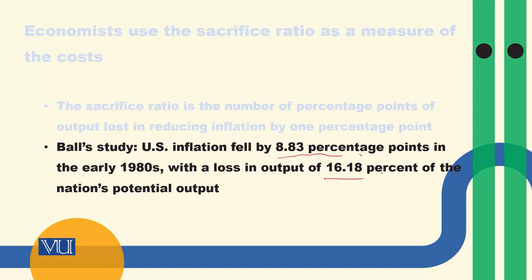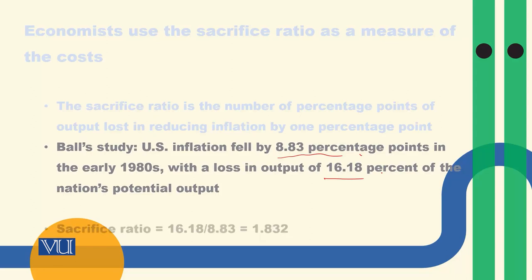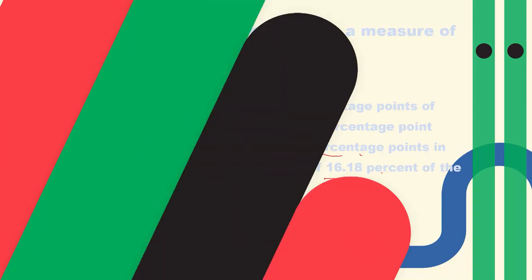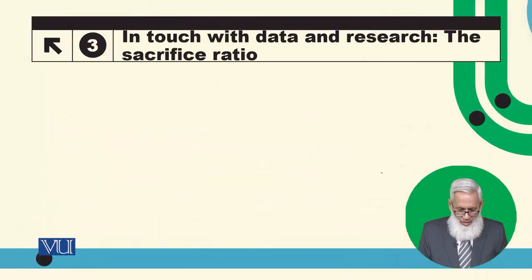So sacrifice ratio calculate kiya: 16.18 ko 8.83 se divide kiya, to 1.832 is ka answer hai. To is ka matlab yeh hai ki inflation ko ek percentage point kam kerne ke nati, potential output mein 1.832% ki kami ho gi.